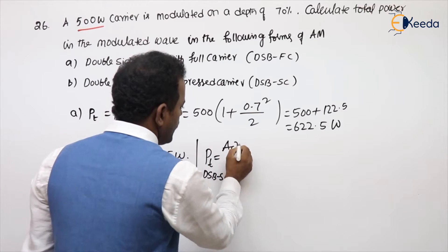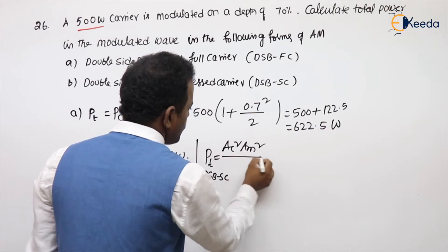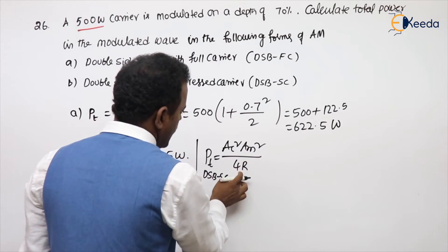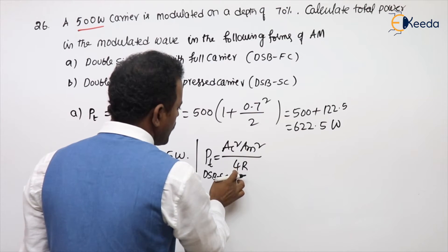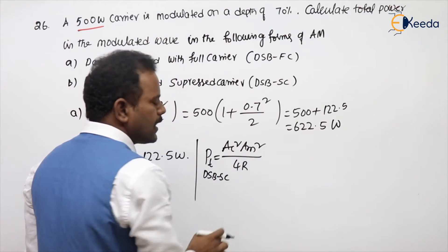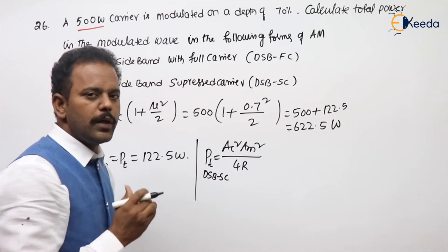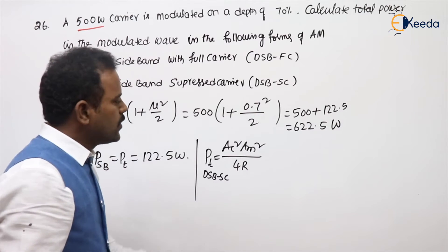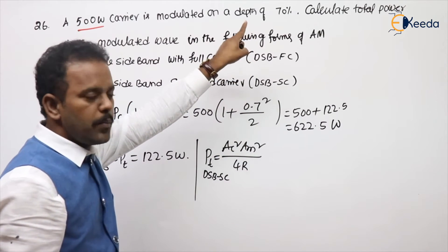AC square AM square by 4R. AC square by 2R is called the carrier. Remaining is AM square by 2. So what is the mu value? Mu equal to KA AM. In DSBFC, KA value 1, so AM value will be 0.7.